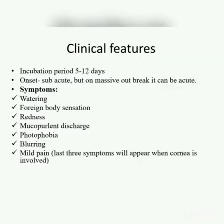The clinical features of trachoma include an incubation period of 5 to 12 days. It is usually subacute, but during a massive outbreak it can be acute. Symptoms include watering, foreign body sensation, redness, mucopurulent discharge, photophobia, blurring, and mild pain. The last three symptoms — photophobia, blurring, and mild pain — will only appear when the cornea is involved.